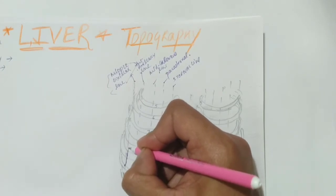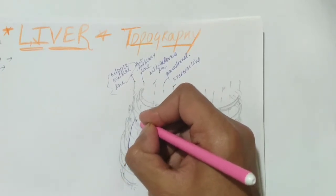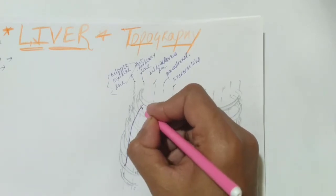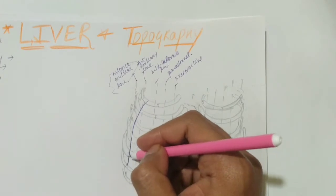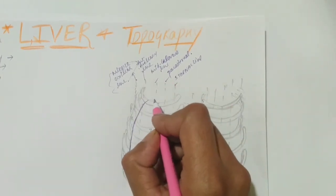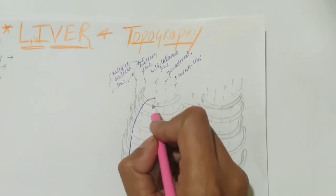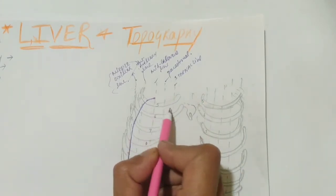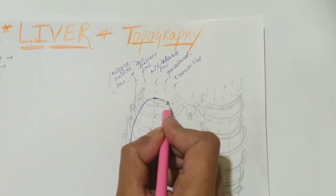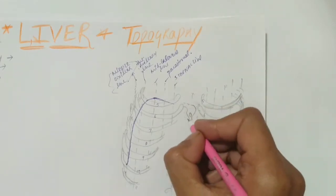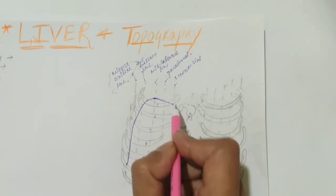The upper boundary of the liver ascends upward, attached to your diaphragm, and takes an oblique turn. It ascends along the left side of your diaphragm. The diaphragm lies to the right of this upper boundary. It ascends in the left line and reaches your 4th intercostal space at the level of your mid-clavicular line. From here, it takes an oblique descent, descending and crossing your sternum, just above the base of your xiphoid process.